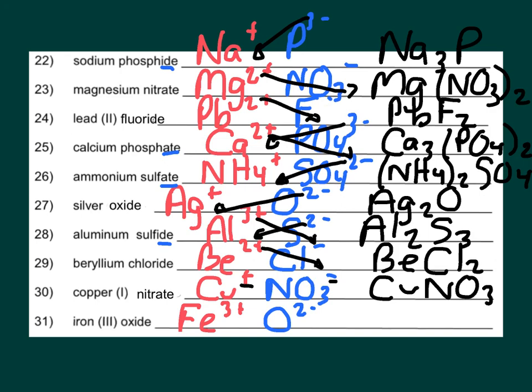Iron 3 oxide. Again, I have to criss-cross my charges. That means that's Fe2O3. So hopefully that clarifies any problems that you might have. If you have other questions, feel free to ask me tomorrow. But that's pretty much it for ionic compounds.